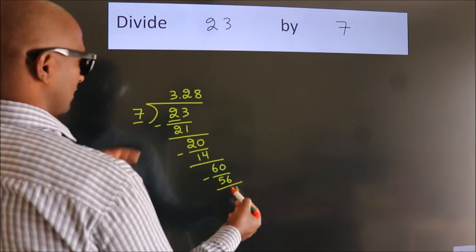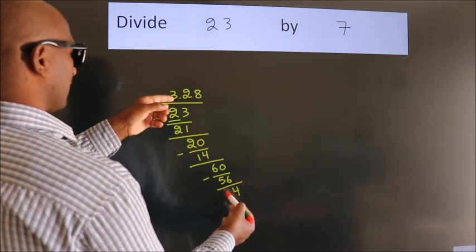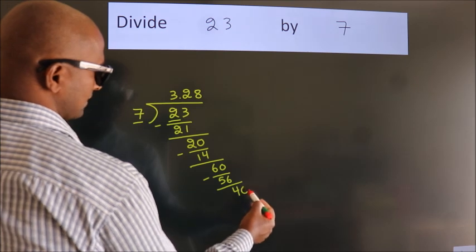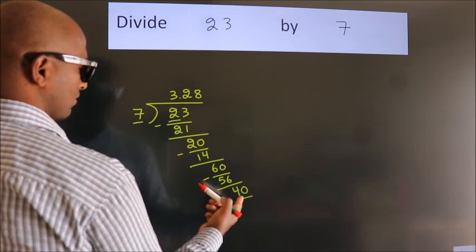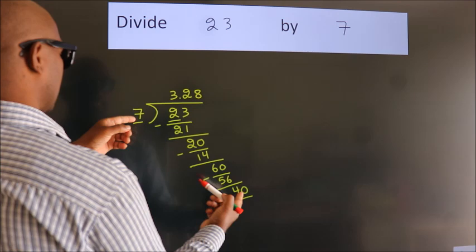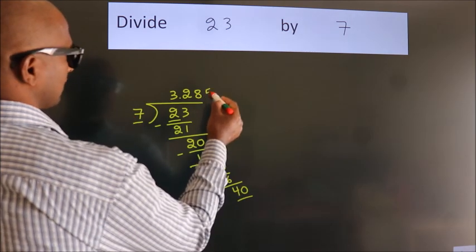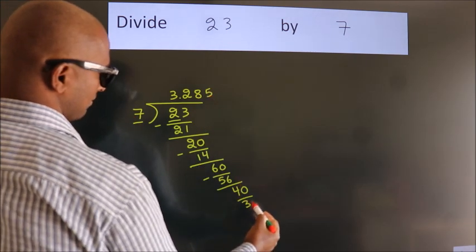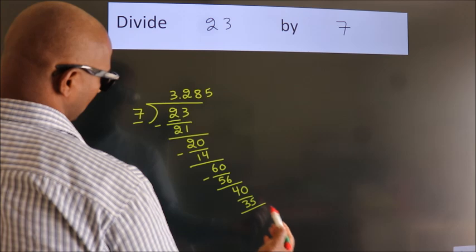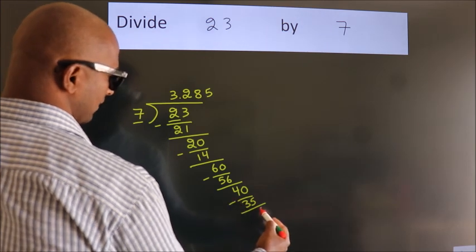After this, we already have the decimal, so directly take 0. So, 40. A number close to 40 in the 7 table is 7 fives, 35. Now we subtract. We get 5.